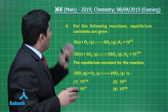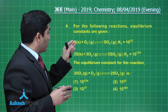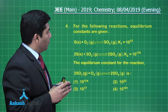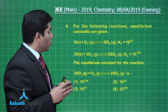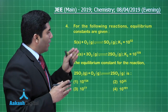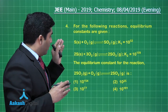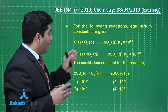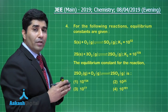This question provides equilibrium constants for two reactions: sulfur plus oxygen in equilibrium with SO₂ where K1 equals 10 to the power 52, and twice S plus thrice O₂ in equilibrium with twice SO₃ where K2 equals 10 to the power 129. We need to find the equilibrium constant for the third reaction: twice SO₂ plus O₂ in equilibrium with twice SO₃.